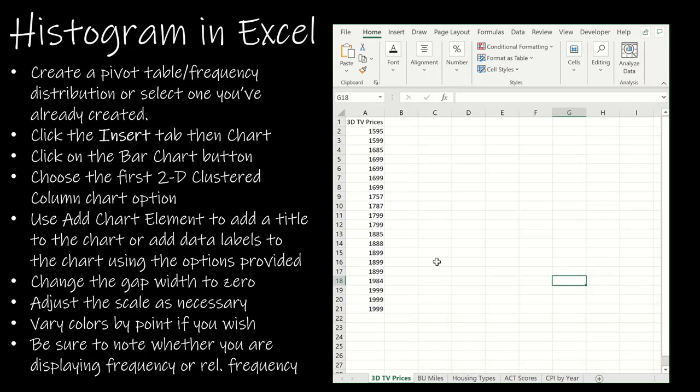So I have our 3D TV prices data. And I'm going to create our histogram from that. I'm going to show you how to do this using a pivot table. So you might be saying, I already know how to do this and I don't have to make a pivot table. And that's true. But obviously, I'm teaching you this class. And in this class, part of your project is to first create a pivot table and then create a histogram from that pivot table. So that's the method I'm going to show you.